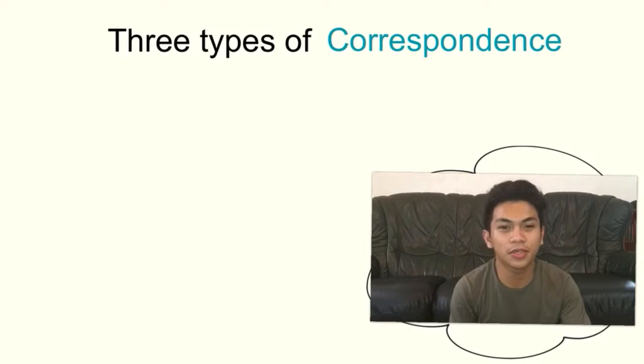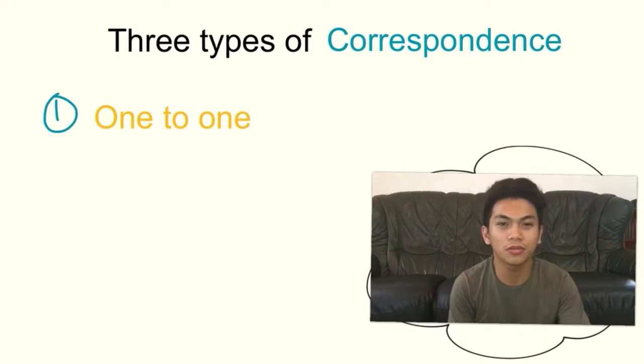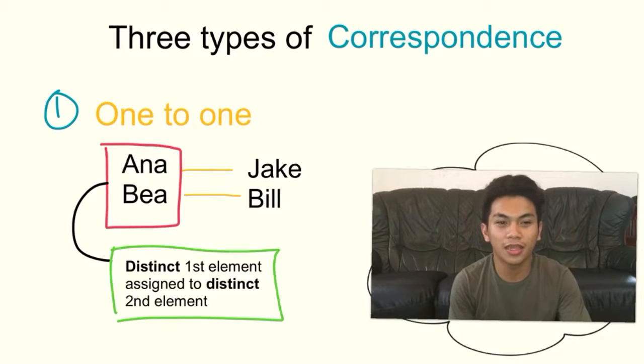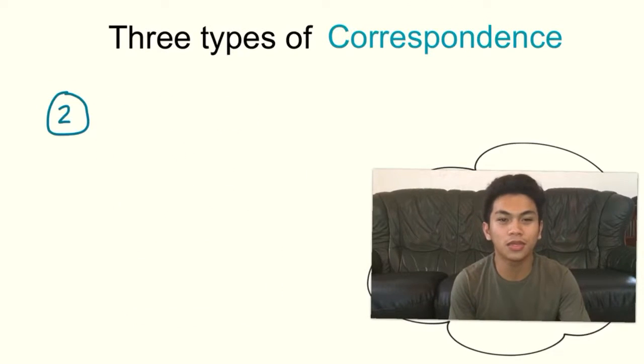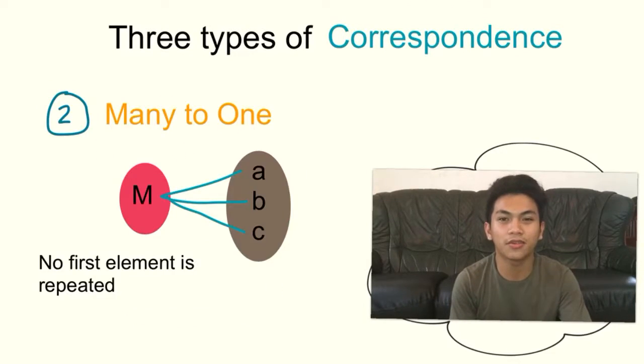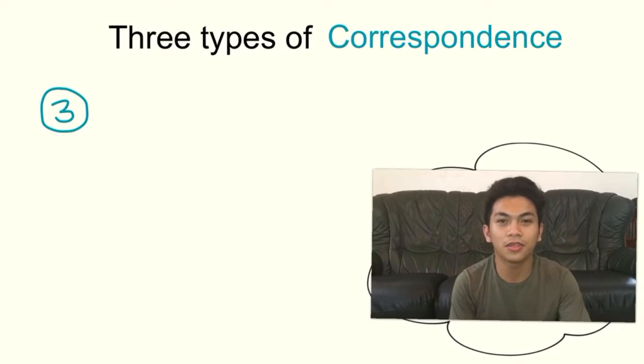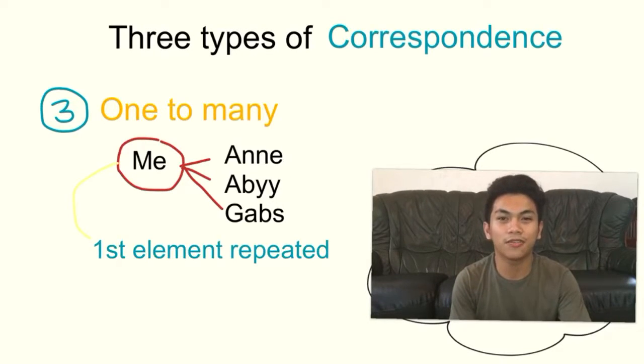There are three types of correspondence. One is one-to-one, which is a function. Another one is many-to-one, which is another function. But if it is one-to-many, it is not a function.